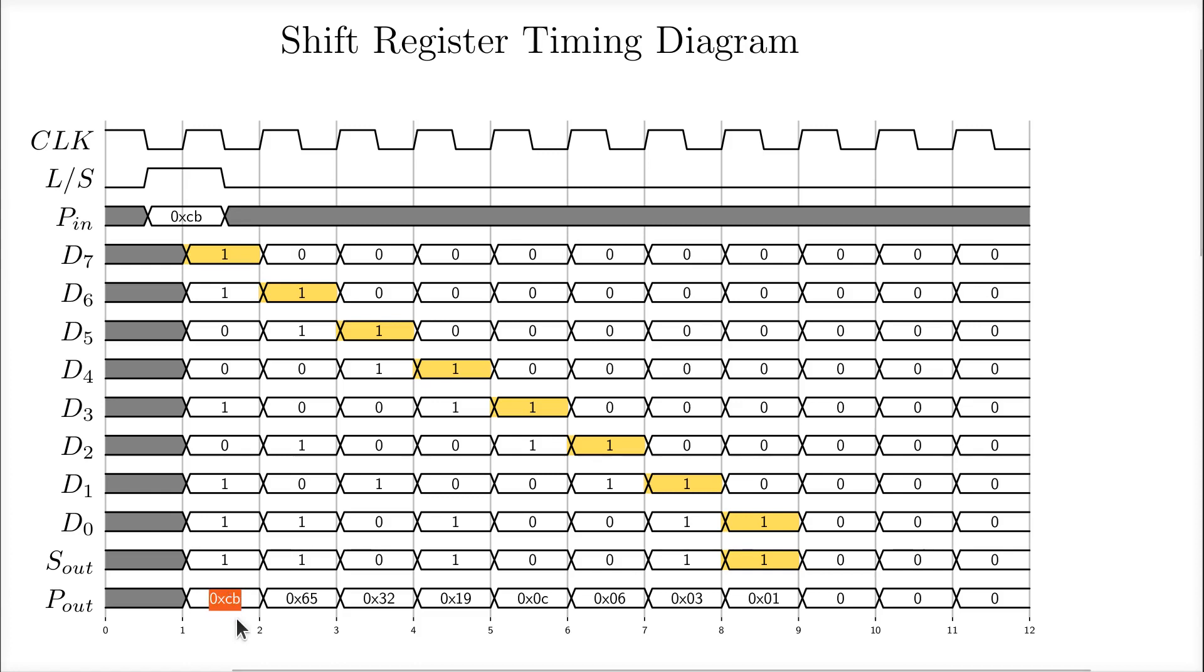We can also see that the parallel output value changes from CB to 65. Why? Because 0, 1, 1, 0 is a 6, and 0, 1, 0, 1 is a 5. CB shift right once is 65. Shifted again, another leading edge right here, another rising edge, I should say. 65 shifted right one becomes a 32 in hex. And again, we're shifting zeros in in this scenario. Maybe I should have shown s in up here as always being zero. Sorry about that. But I think we can visualize that okay.